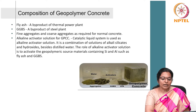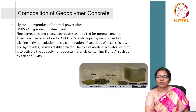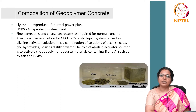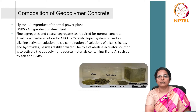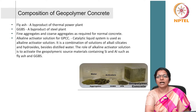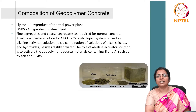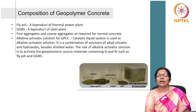Fly ash is a by-product of thermal power plants. GGBS is a by-product of steel plants. Fine aggregates and coarse aggregates are required as for normal concrete. The alkaline activator solution for geopolymer concrete is a catalytic liquid system used as the alkaline activator. It is a combination of solutions of alkali silicates and hydroxides beside distilled water. The role of the alkaline activator solution is to activate the geopolymeric source materials containing silicon and aluminum such as fly ash and ground granulated blast furnace slag. This is the overall composition of geopolymer concrete.